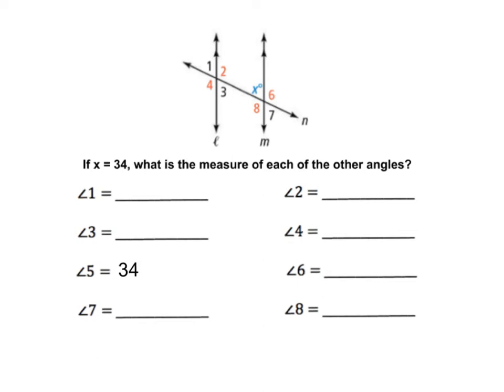Now that we know the relationships between the angle pairs that are formed by two parallel lines being intersected by a transversal, we can use those relationships or properties to help us find missing angle measurements.